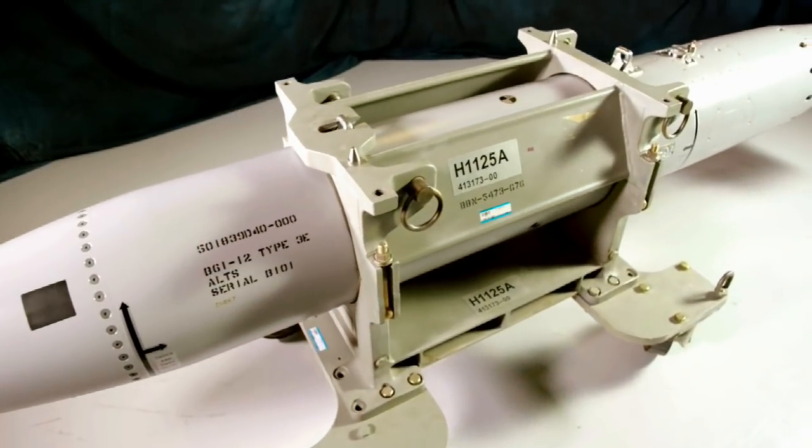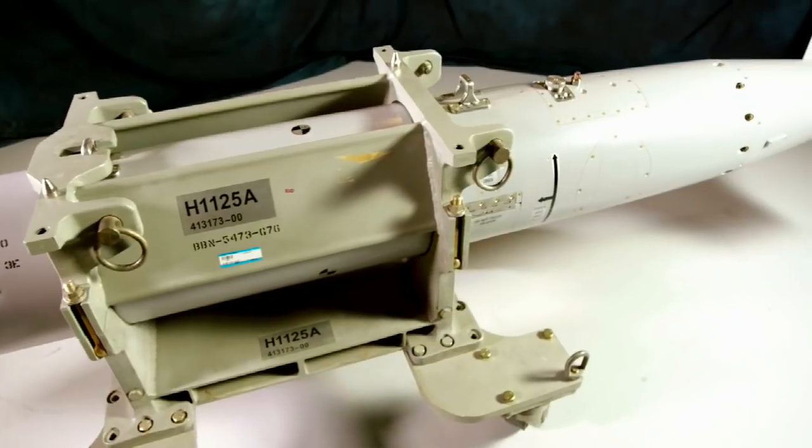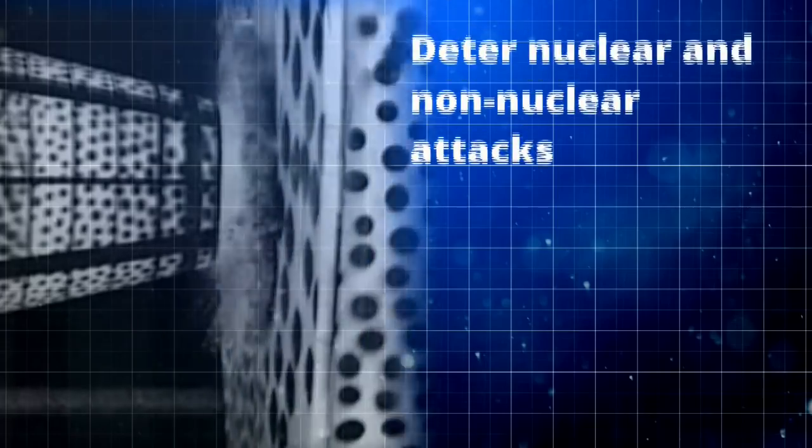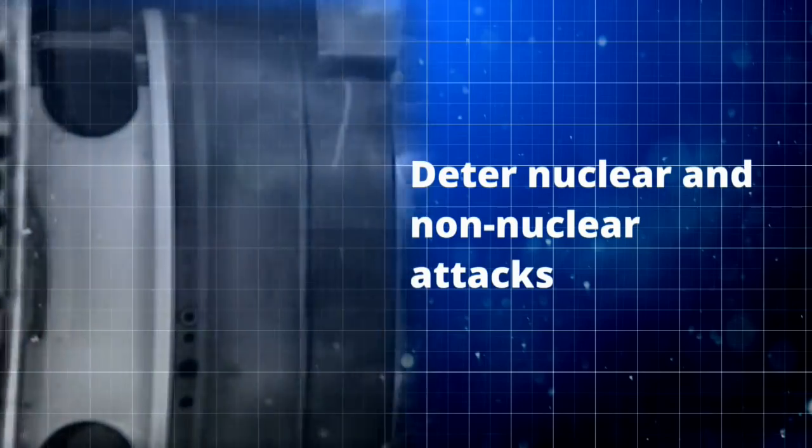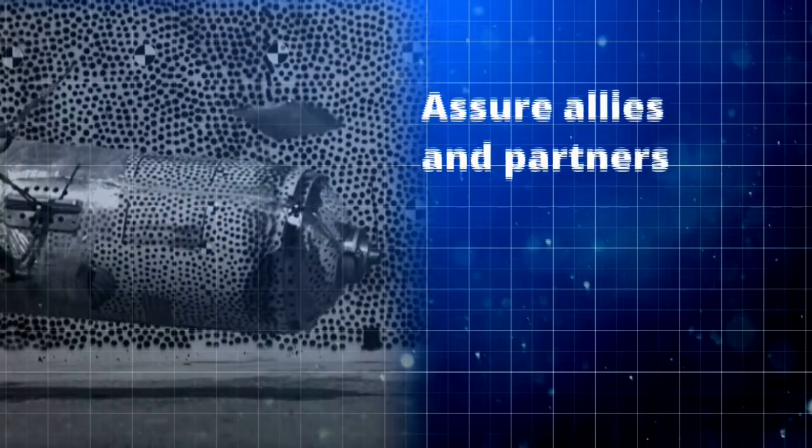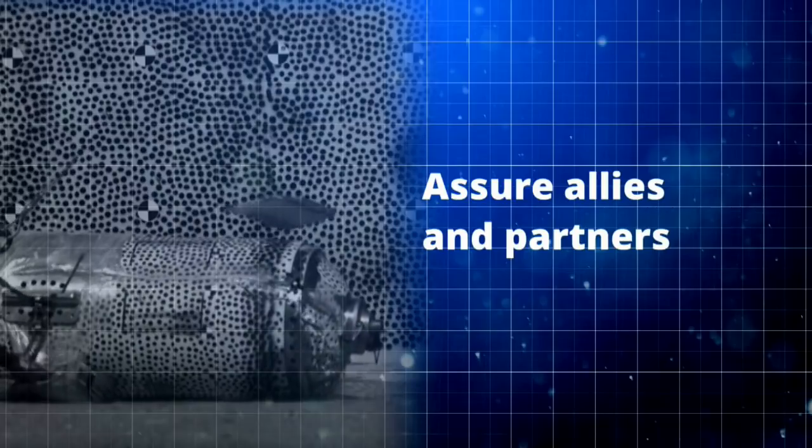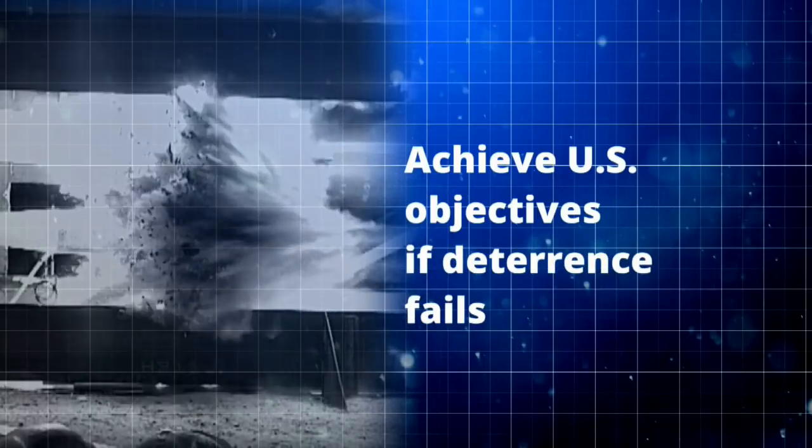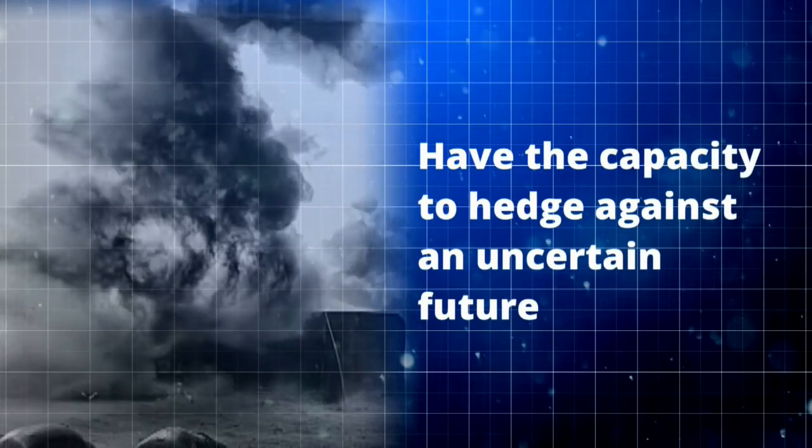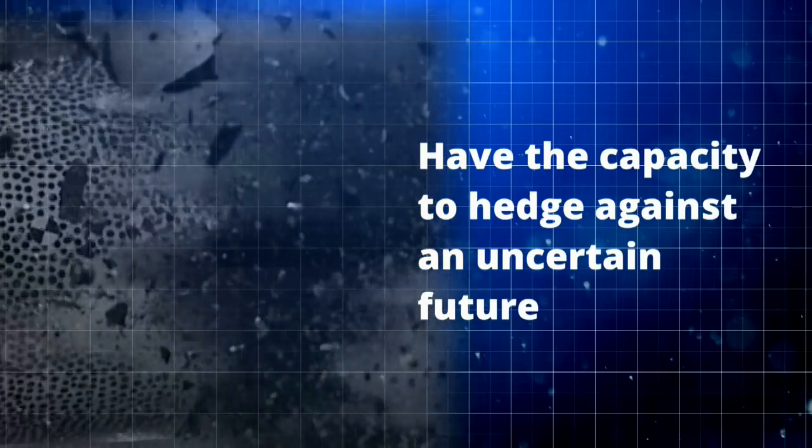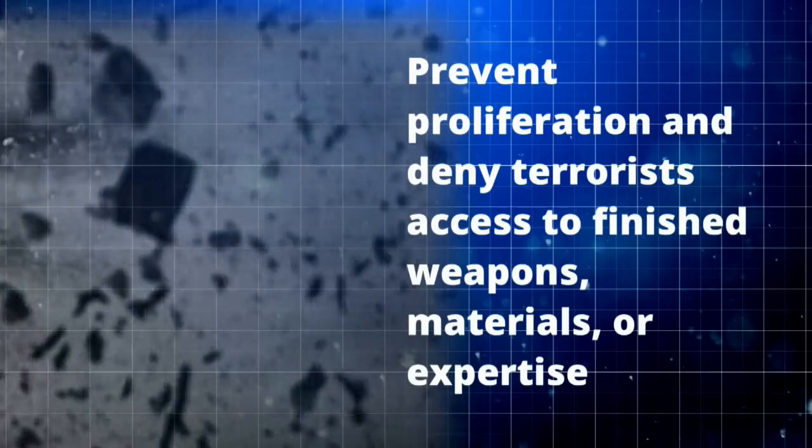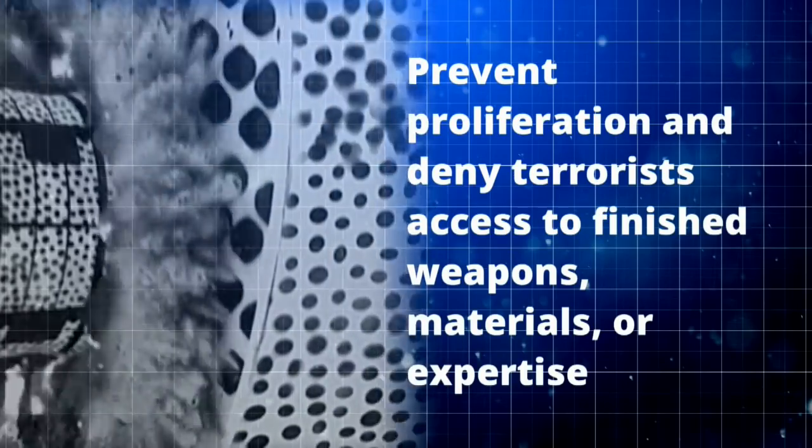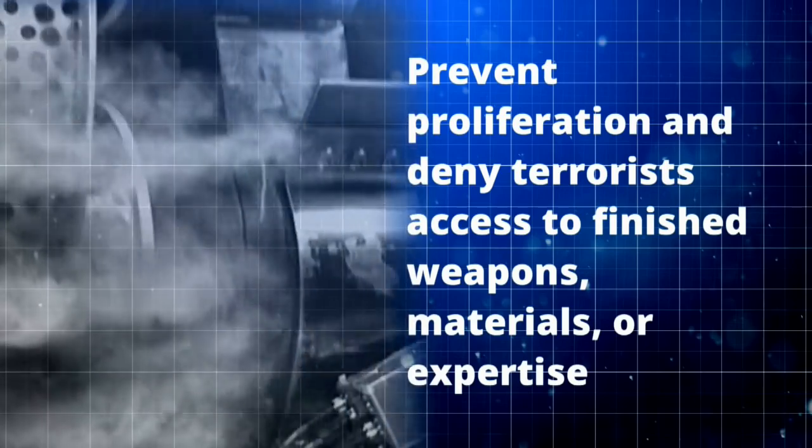The guiding pillars for U.S. nuclear deterrence policy and requirements listed in the NPR are to deter nuclear and non-nuclear attacks, assure allies and partners, achieve U.S. objectives if deterrence fails, have the capacity to hedge against an uncertain future, and prevent proliferation and deny terrorist access to finished weapons, materials, or expertise.